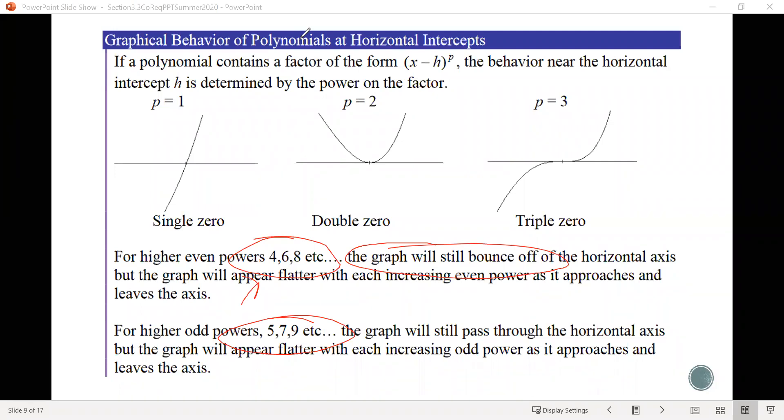For odd powers above 3, so 5, 7, 9, and so on and so forth, we actually also get this same basic shape as what we have here for the multiplicity is 3. But what happens is that it just gets flatter and flatter. So this little flat part here just gets flatter and flatter as the odd exponent increases.